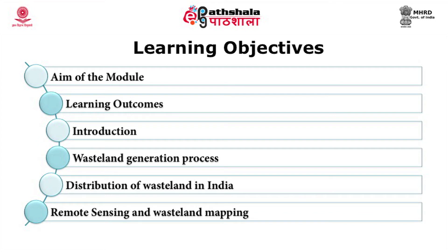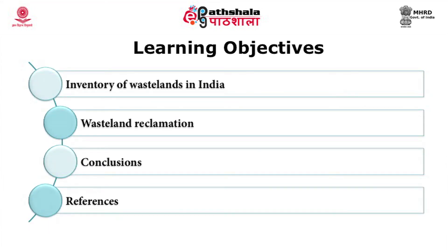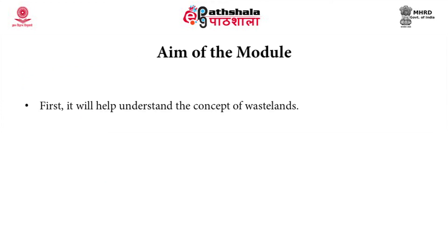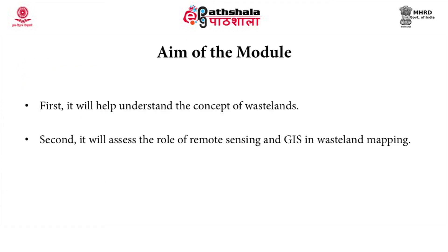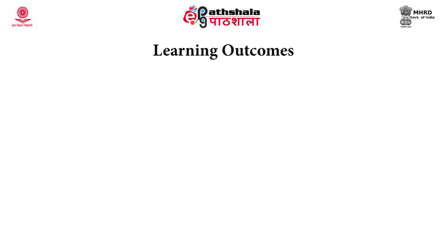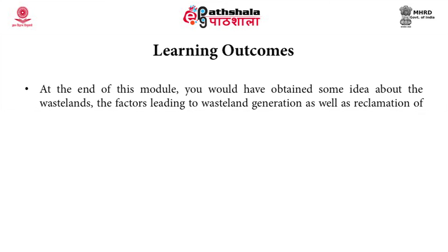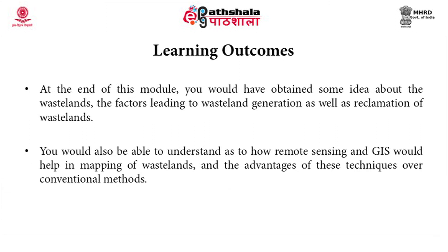We would be studying what is wasteland, what are the processes that lead to the generation of wastelands, how wastelands are distributed in India, the methods for remote sensing and other methods that can be used for wastelands, as well as the inventory of wastelands in India. At the end you would be able to understand what are the wastelands, how they are generated, how they can be reclaimed, and how remote sensing and GIS help us in this entire process. The aim of this module is to understand the concept of wastelands and assess the role of remote sensing and GIS in wasteland mapping, including the advantages of these techniques over conventional methods.